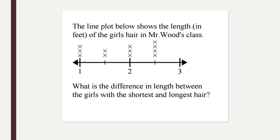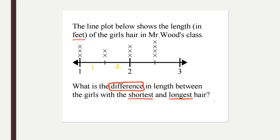Let's do one more. The line plot shows the length in feet of the girls' hair in Mr. Wood's class. In this problem it's important to know we're working in feet. What is the difference in length between the girls with the shortest and longest hair? The word difference tells me what to do — I'm going to box that action word. It tells me I'm going to subtract, and the two important words to find my numbers are shortest and longest.